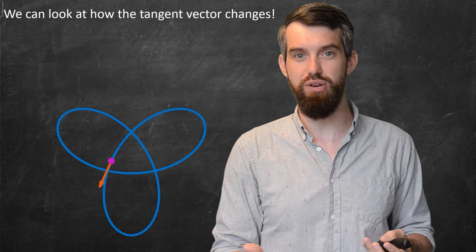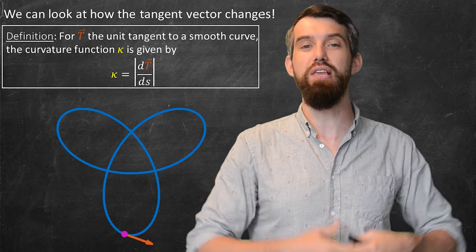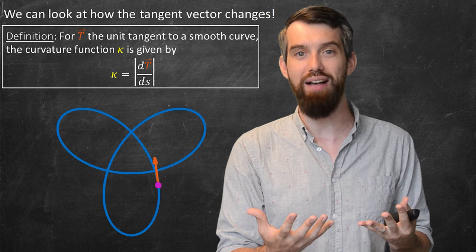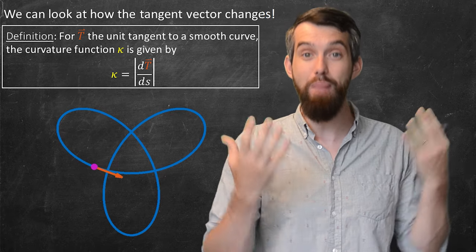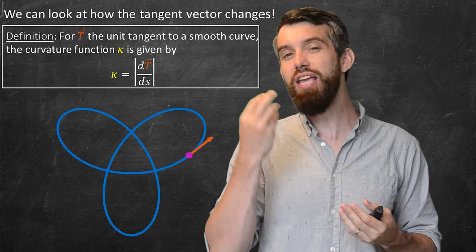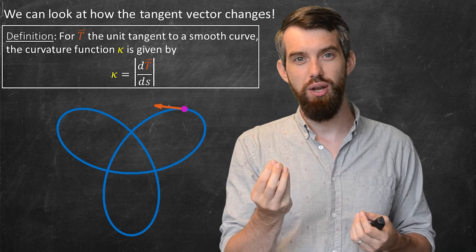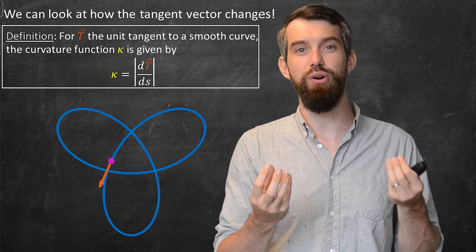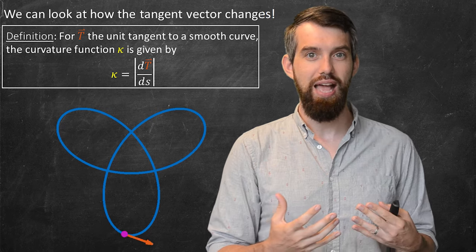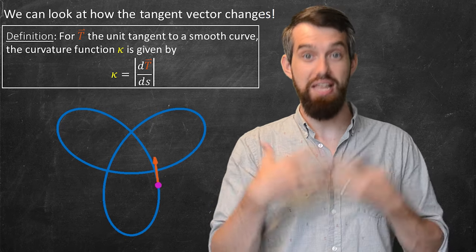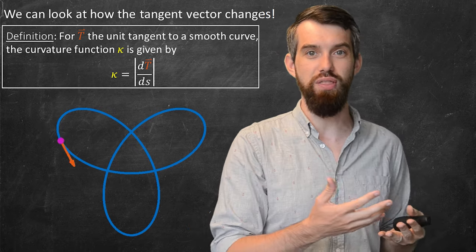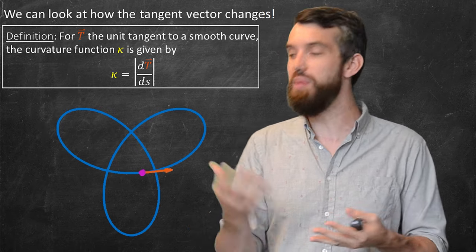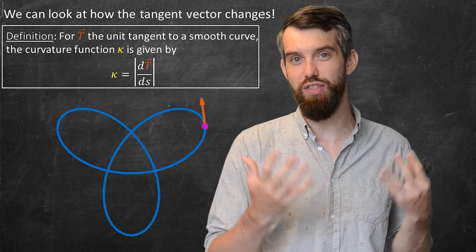Here's my definition of curvature. I'm going to say that the curvature kappa, this is not a k it's a kappa, is going to be defined to be the magnitude of the change of the tangent vector with respect to the arc length parameter s. That is, as I go around my curve, as I increase my arc length, the tangent vector is going to change, and the rate of change is going to be captured by this curvature, this kappa.